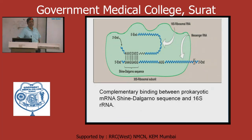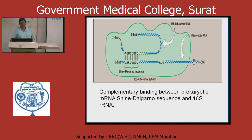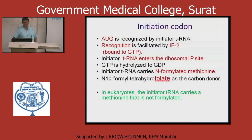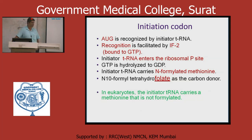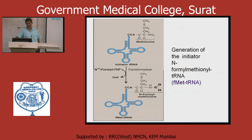Protein synthesis starts from AUG. A few base pairs upstream of AUG there is the Shine-Dalgarno sequence, which makes a particular starting point so that ribosomal subunits 16S — small and large subunits — attach to the mRNA via this sequence. The AUG is the initiation codon. In prokaryotes there is formyl-methionine (fMet). The IF2 initiation factor and GTP hydrolysis to GDP, with N-formyl tetrahydrofolate, makes the formyl-methionine tRNA in prokaryotes. In eukaryotes, methionine tRNA forms.